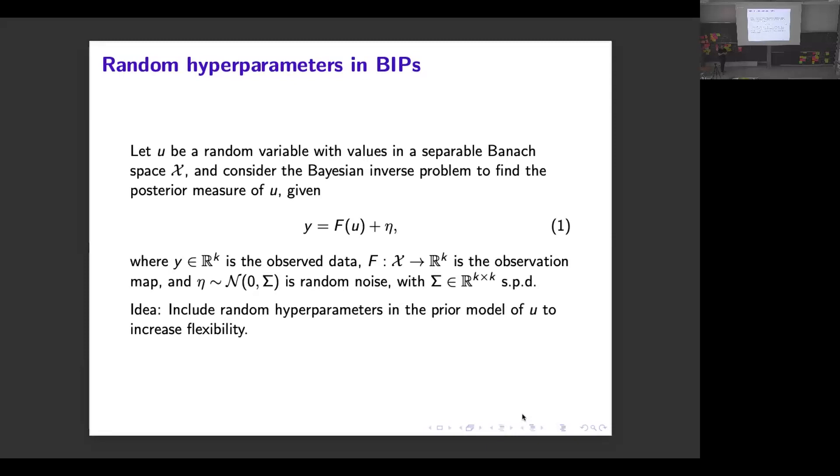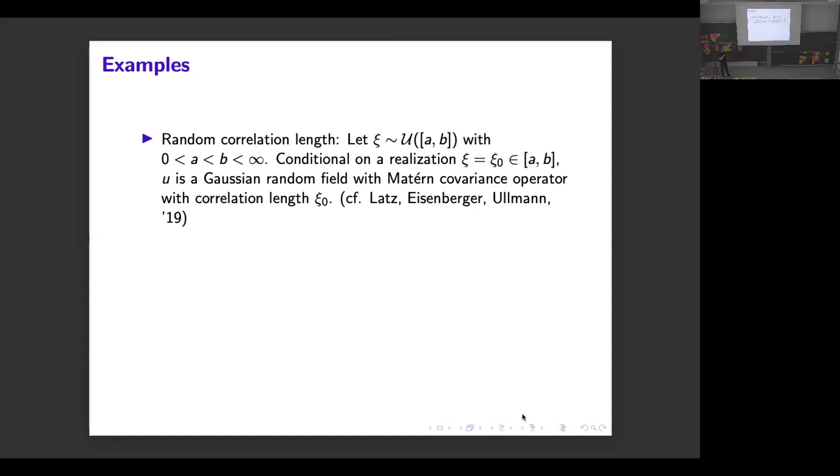Actually, in Elizabeth's group there's already been some work done on this two years ago. This is just one example where you could take a Gaussian diffusion coefficient with Matérn covariance operator and model the random length as the correlation length random. I think they also did it for the variance of this parameter.